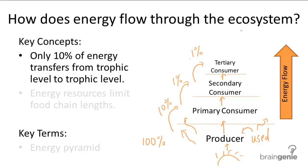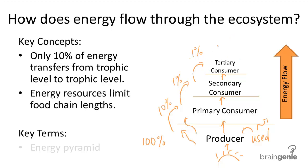You can see why, when we were talking about how theoretically there could be a consumer above tertiary consumers, it's not actually that practical — because these quaternary consumers would only receive 10% of the 0.1% of energy, so they only receive 0.01% of the original energy. And that's just not enough energy for this trophic level to function.